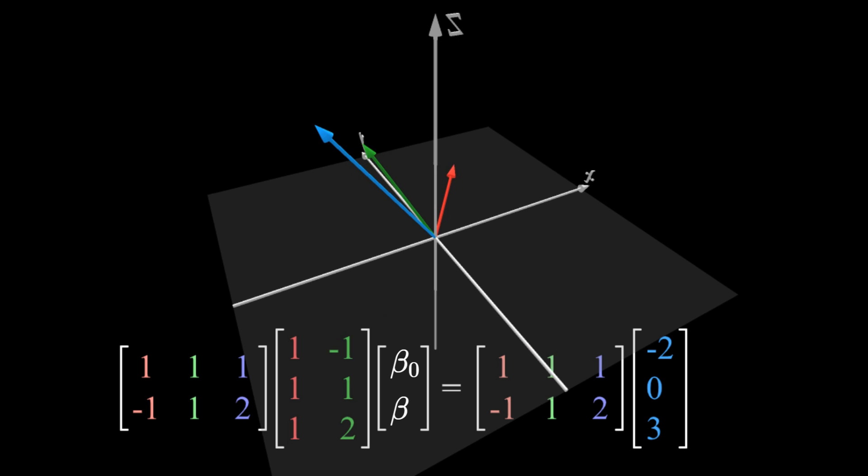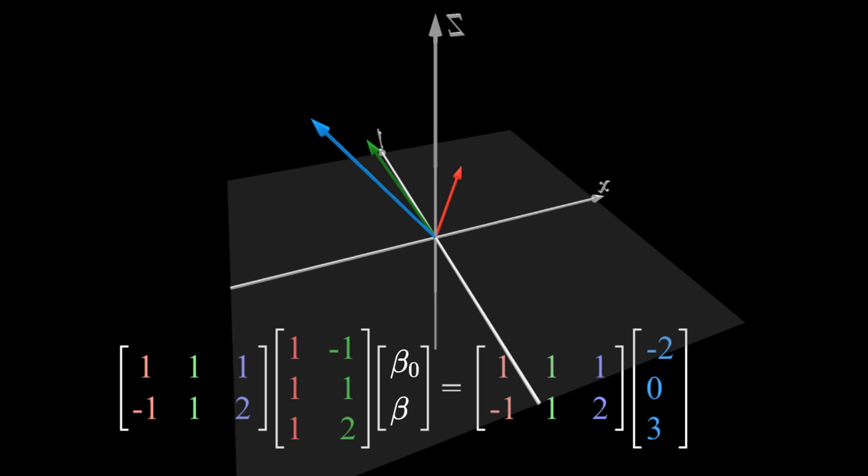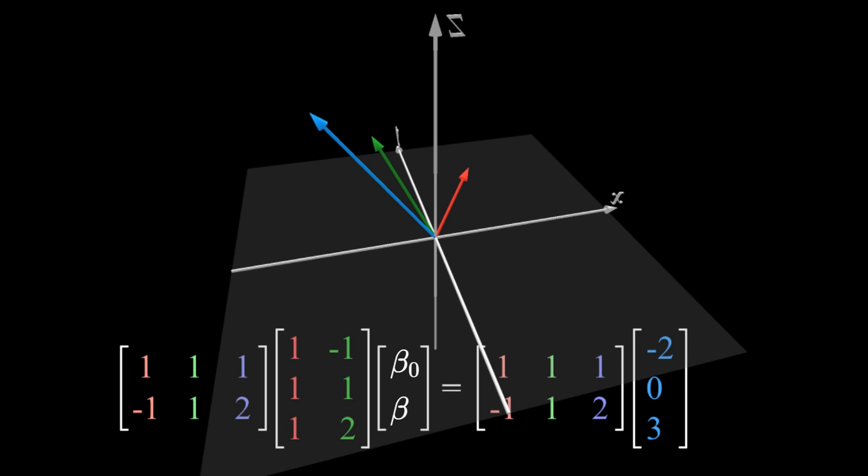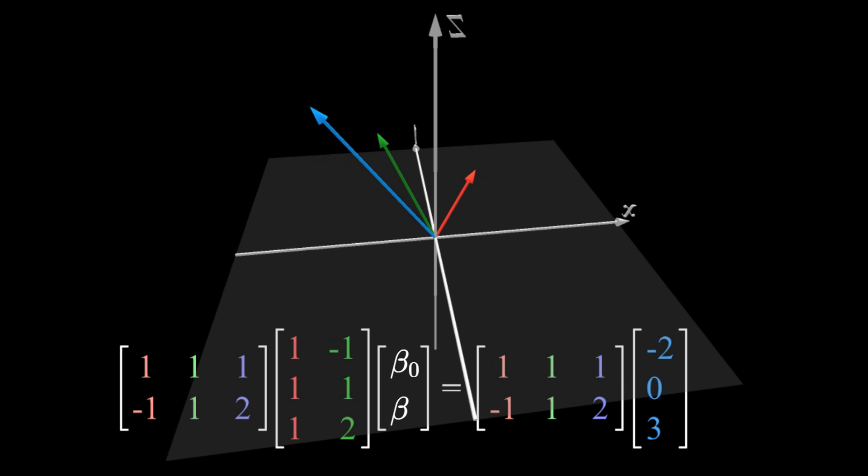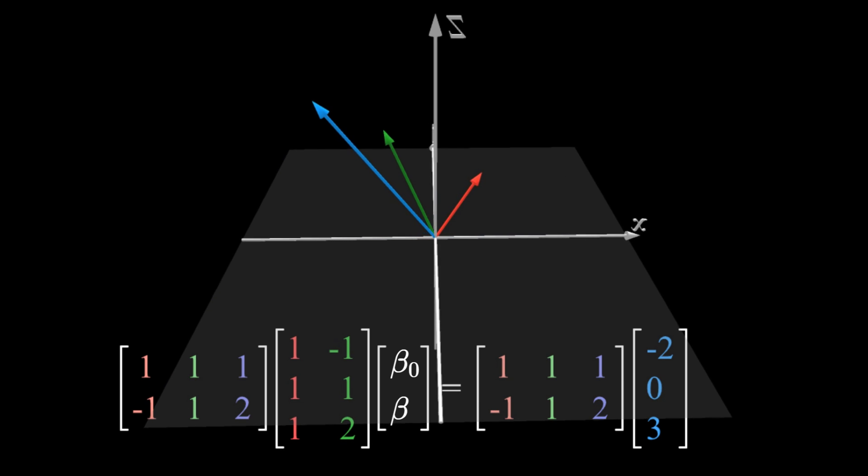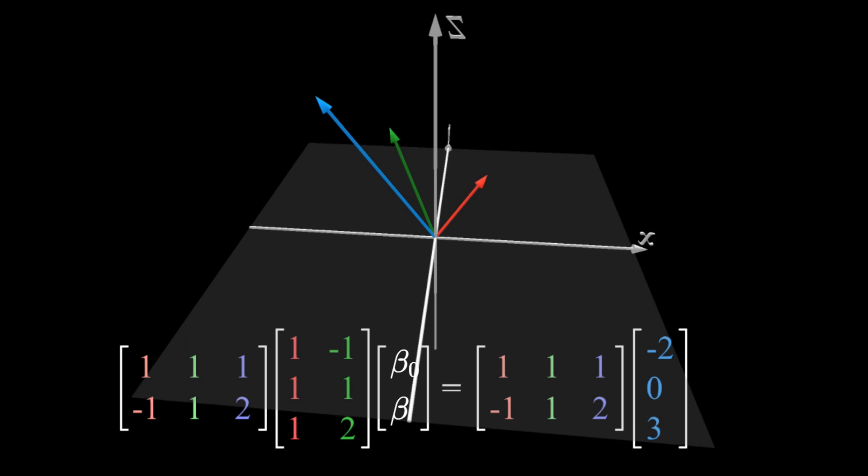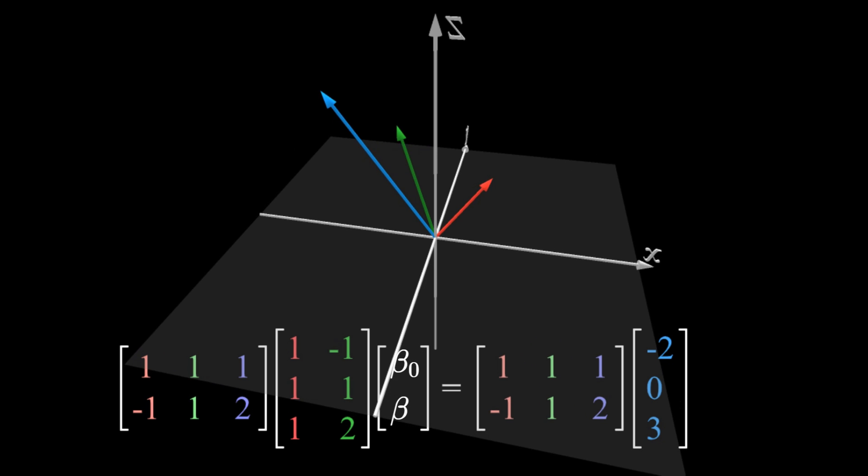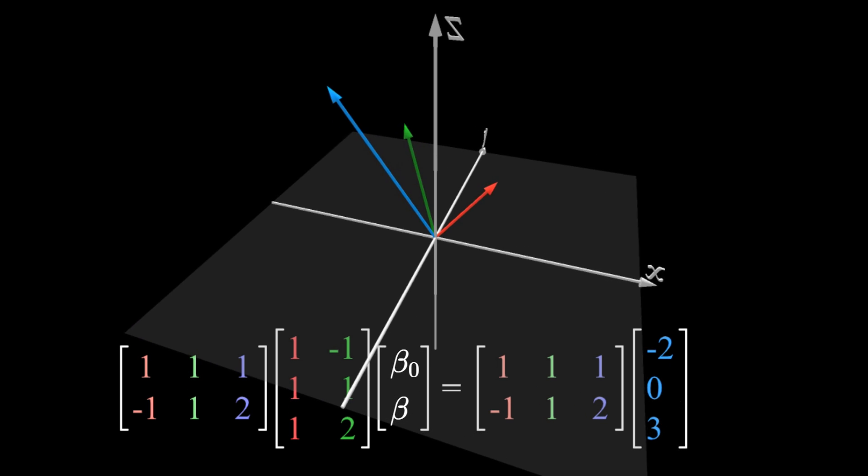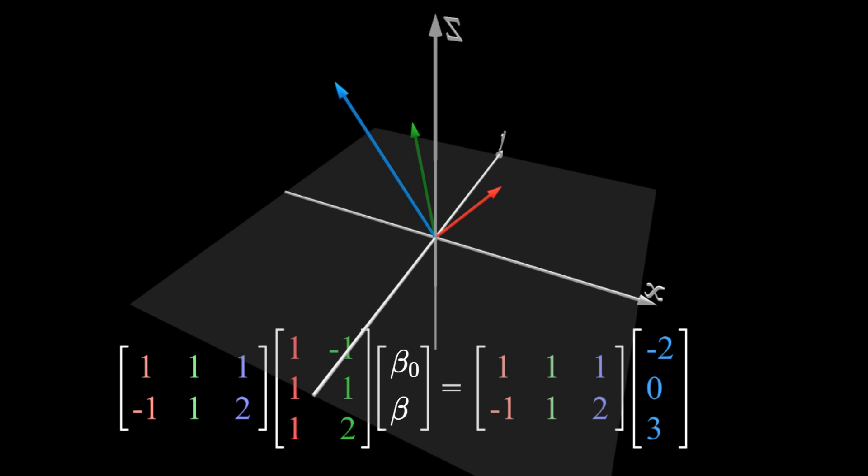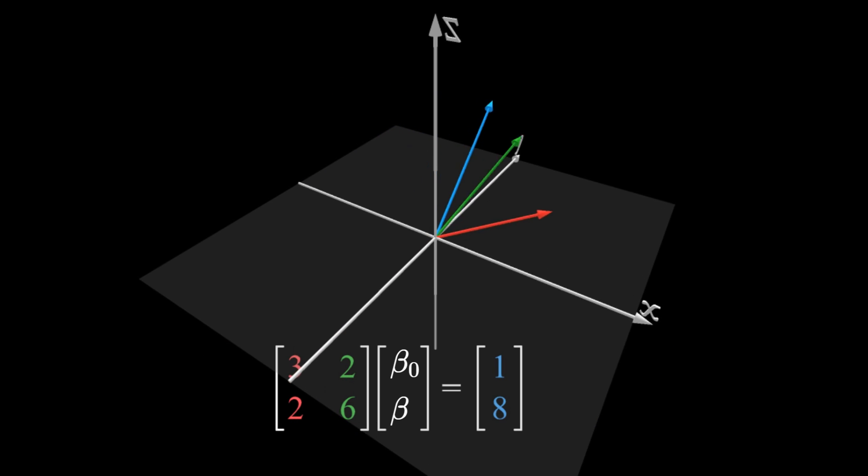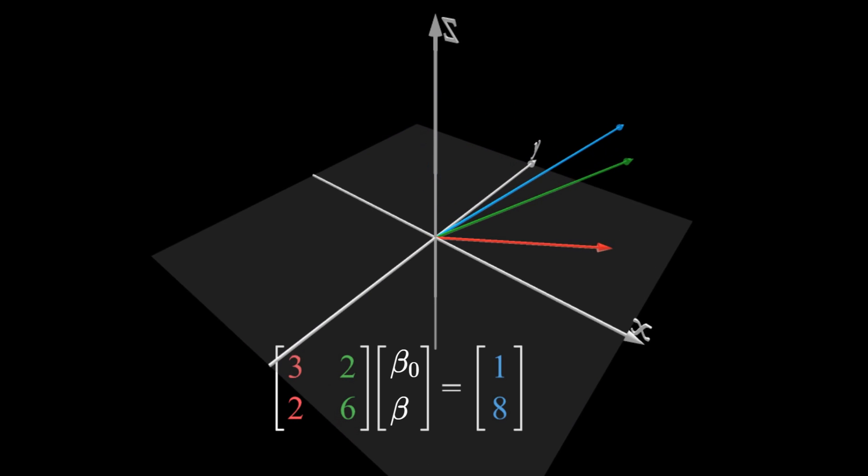So let's put all of these together. The left-hand side of the normal equations is applying a 3D to 2D transformation to two vectors at once, while the right-hand side is applying that same transformation to one 3D vector. Letting the transformation play out simultaneously on both sides, we end up with this equation.